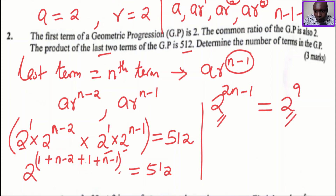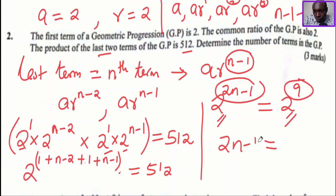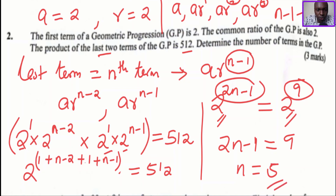Since the bases are the same, we drop the bases and equate the powers: 2n minus 1 equals 9. Solving this, n equals 5. That is the number of terms of the GP, denoted by n — so there are 5 terms in the GP.